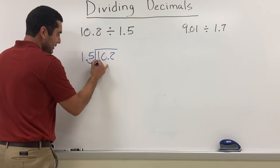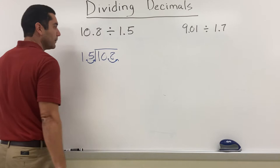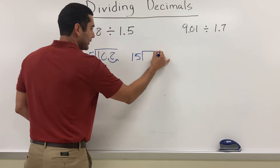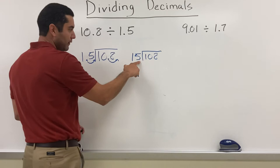Now we can never have a decimal on the outside, so we're going to move it one space to the right. If we do that on the outside, we have to do the same thing on the inside - one space to the right. So now I'm going to have 15 on the outside and 108 on the inside.